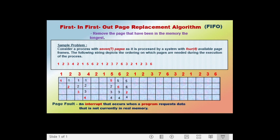The next page called is page 1. The frames contain pages 5, 6, 2, and 4. Page 1 is not in the frame, causing one page fault. We need to swap out a page; from among pages 5, 6, 2, and 4, it is page 4 that has been in memory the longest. Page 4 is swapped out and page 1 is swapped in.